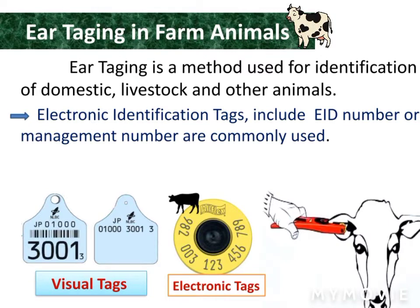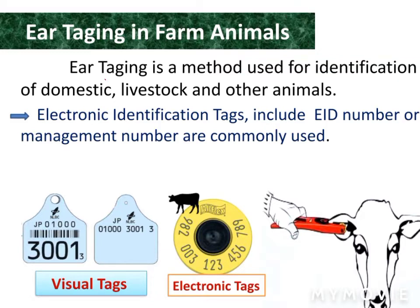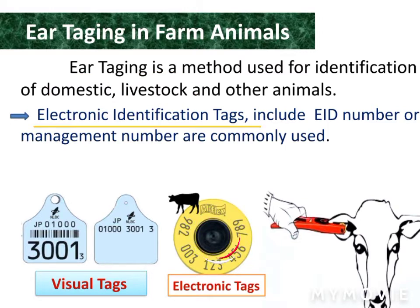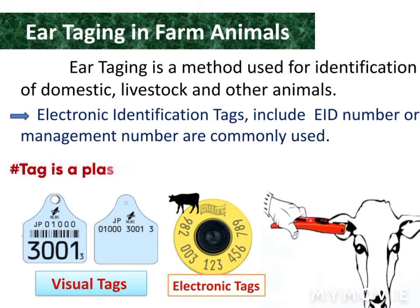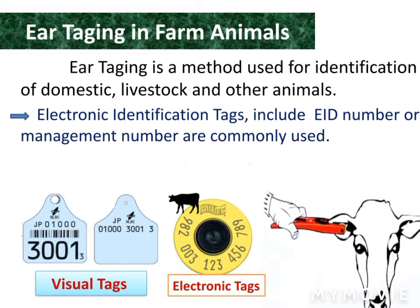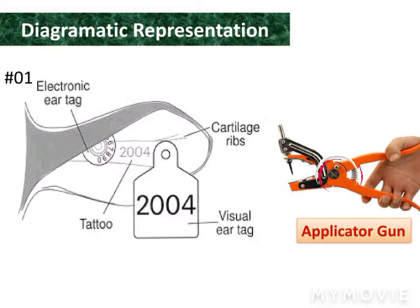Tagging in farm animals: this method is used for identification of domestic livestock and other animals. For this purpose, electronic identification tags include an EID number or management number. You can see visual and electronic tags below.